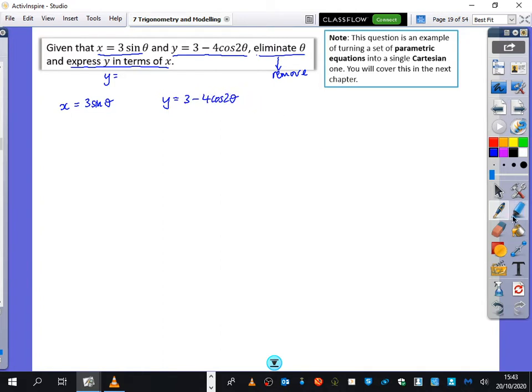Now, the problem here, well not really the problem, but the thing that I'm interested in is this one has got an argument of 2 theta, and this one's got an argument of theta. So I'm going to just think of my cos 2 theta identities.